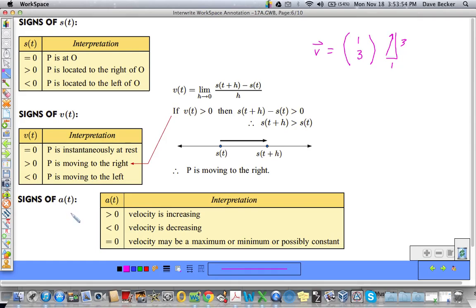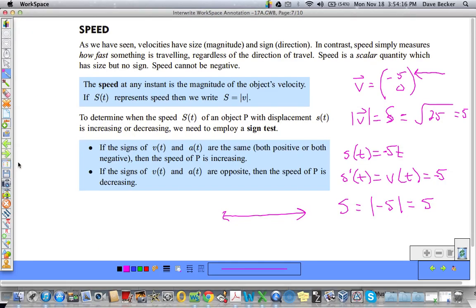And acceleration. If acceleration is greater than zero or positive, the velocity is increasing. If you're stepping on the gas. If it's less than zero or negative, you're stepping on the brake and velocity is decreasing. And if it's equal to zero, then we have a max or a min or possibly a constant. It just depends on the function. Again, more in class.